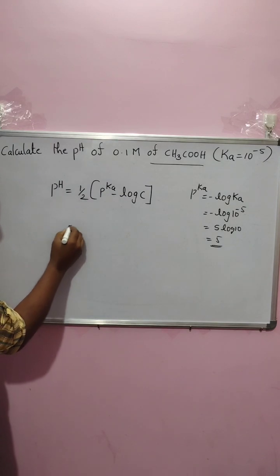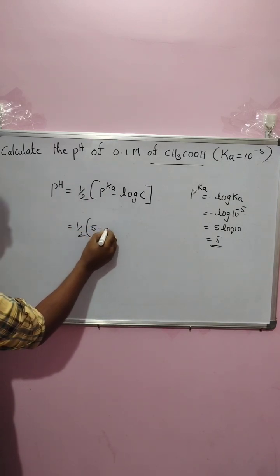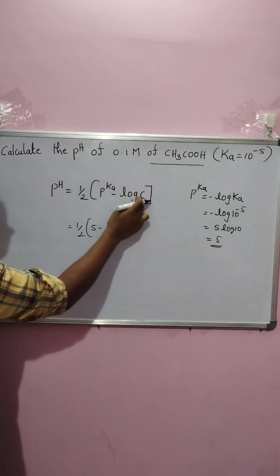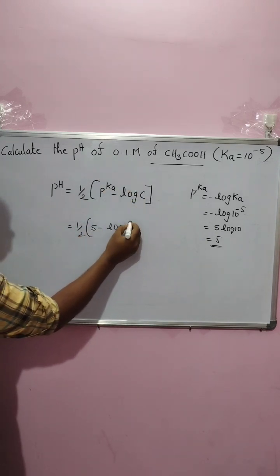Then if you substitute all the values in this, 1 by 2 into 5 minus log C. Concentration, how much is there? 10 to the power of minus 1.